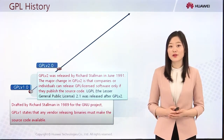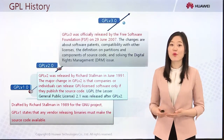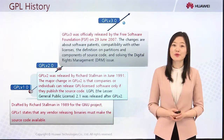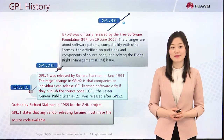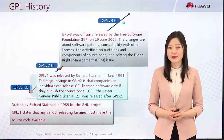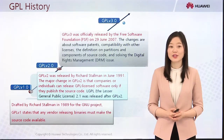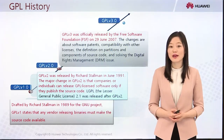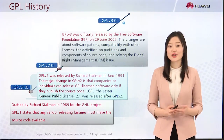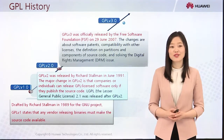After consultation with lawyers and people of the same occupation, GPL v3 was officially released by the Free Software Foundation (FSF) on 29 June 2007. The changes are about software patents, compatibility with other licenses, the definition of partitions and components of source code, and solving the digital rights management (DRM) issue. GPL v3 is very controversial, so only a few individuals and companies develop software using this license.